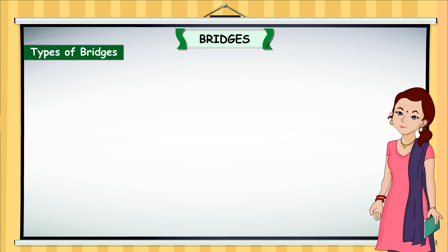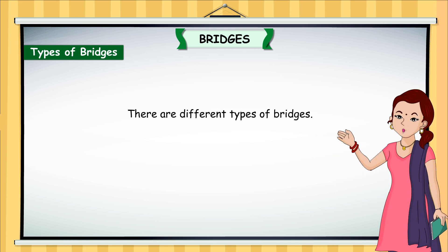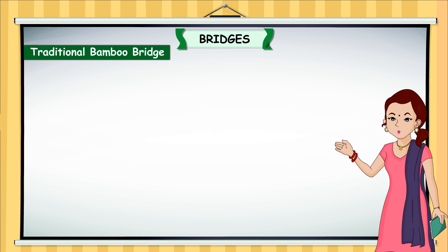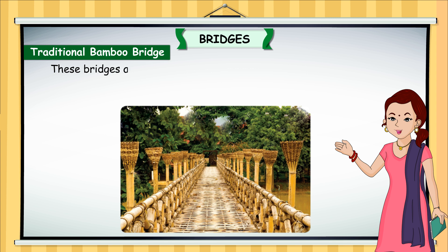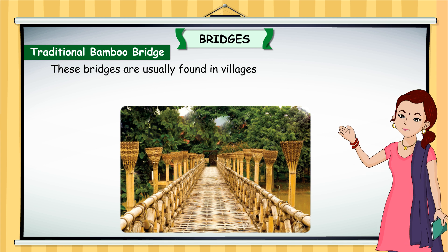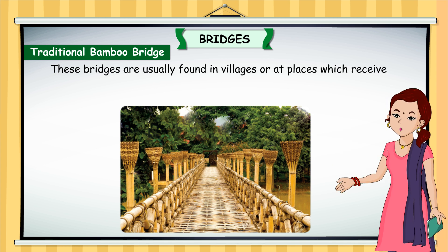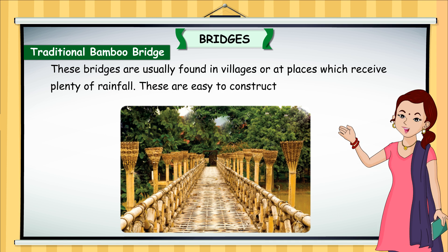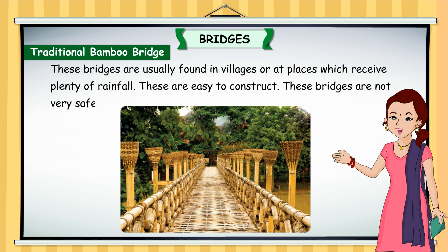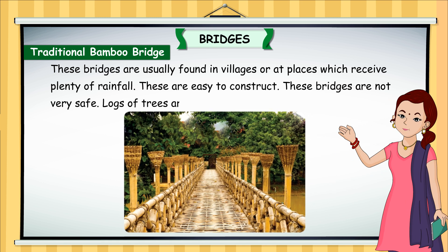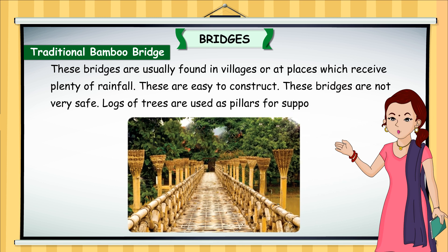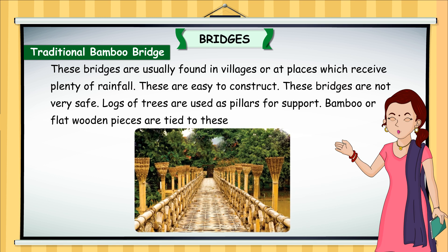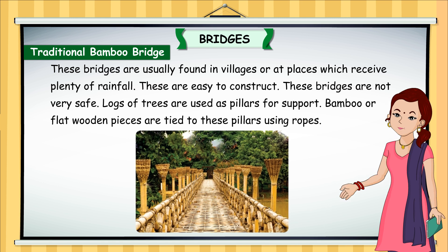There are different types of bridges. Traditional bamboo bridges are usually found in villages or at places which receive plenty of rainfall. These are easy to construct but not very safe. Logs of trees are used as pillars for support, and bamboo or flat wooden pieces are tied to these pillars using ropes.